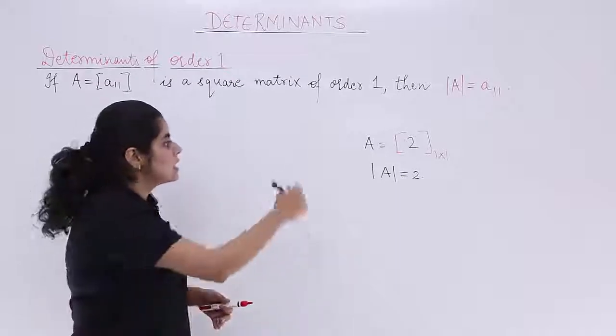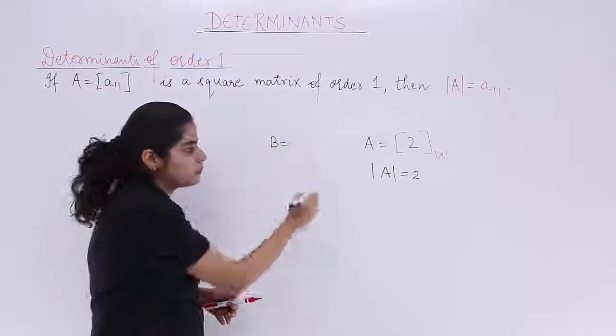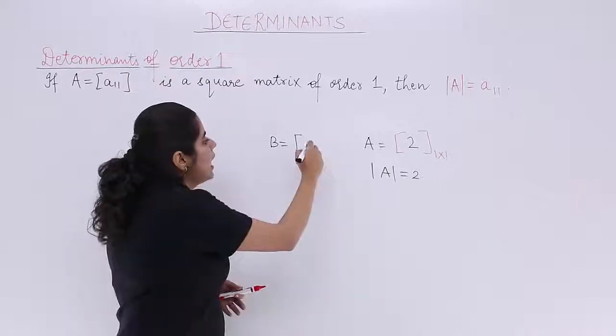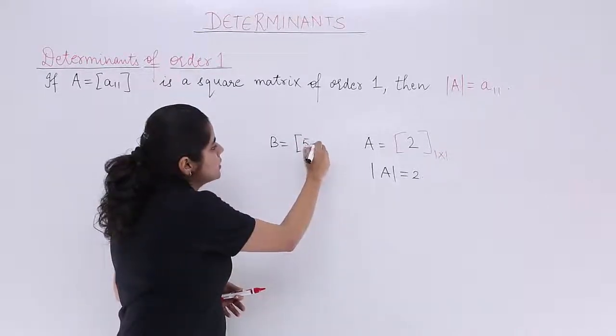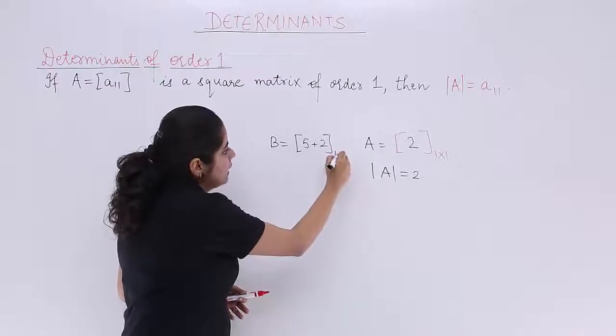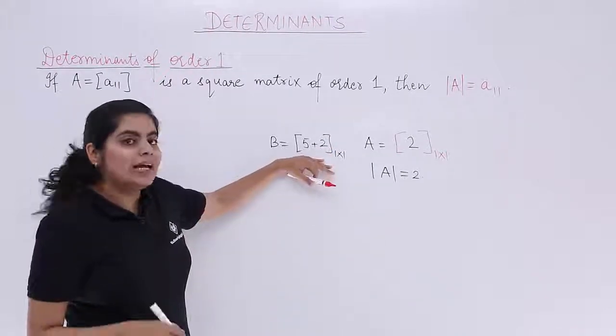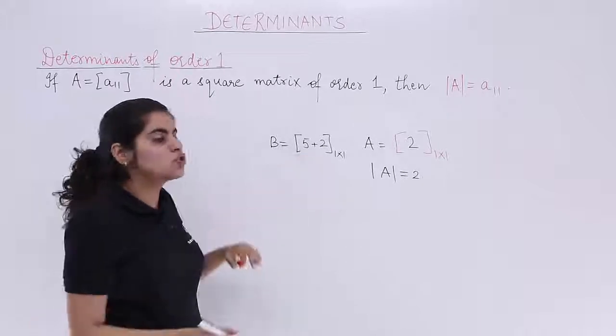If I have another matrix, say now I have a matrix B and that matrix is nothing but an expression, and that expression is say 5 plus 2, and that is again a 1 by 1 matrix given to me. Now you know internally that 5 plus 2 is 7.